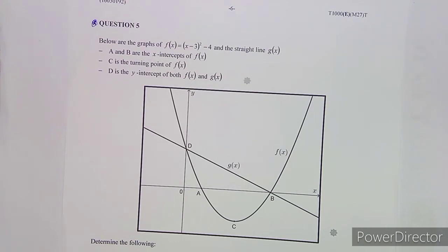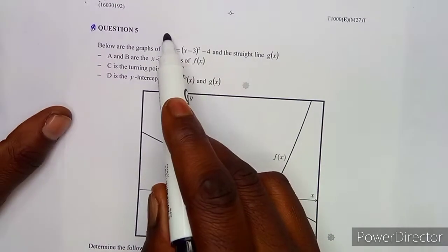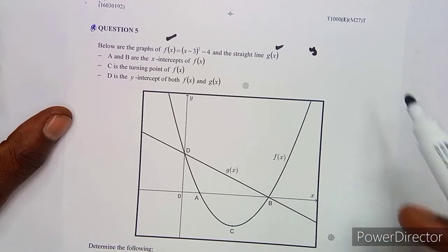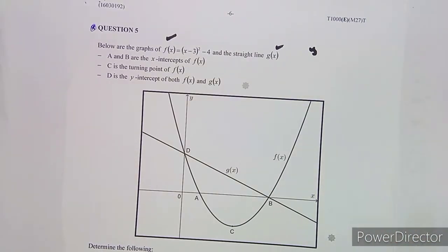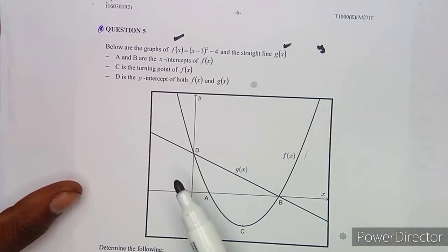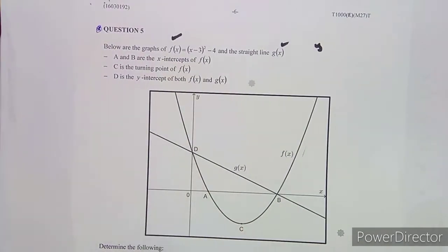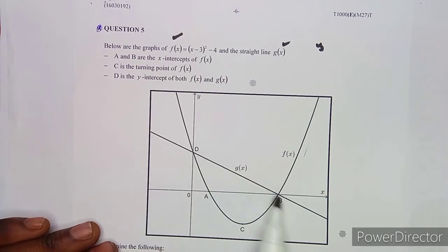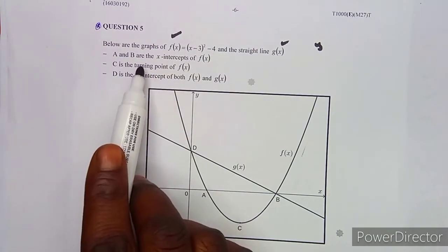We are given below the graphs of f(x) and g(x). A graph can be given in function form like f(x) or g(x), or as y equals something. When there are two functions, we have f(x) as the quadratic graph — which is our parabola — and g(x) as the straight line.